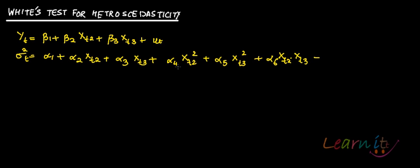Now, what would be the heteroscedasticity? What would be the null hypothesis for no heteroscedasticity? In case my Alpha2 is 0, Alpha3 is 0, Alpha4 is 0, Alpha5 is 0, and Alpha6 is 0. So, what would be left is just Alpha1. Sigma squared T is equal to Alpha1. Sigma squared T is equal to a constant, and that's what you want for homoscedasticity.